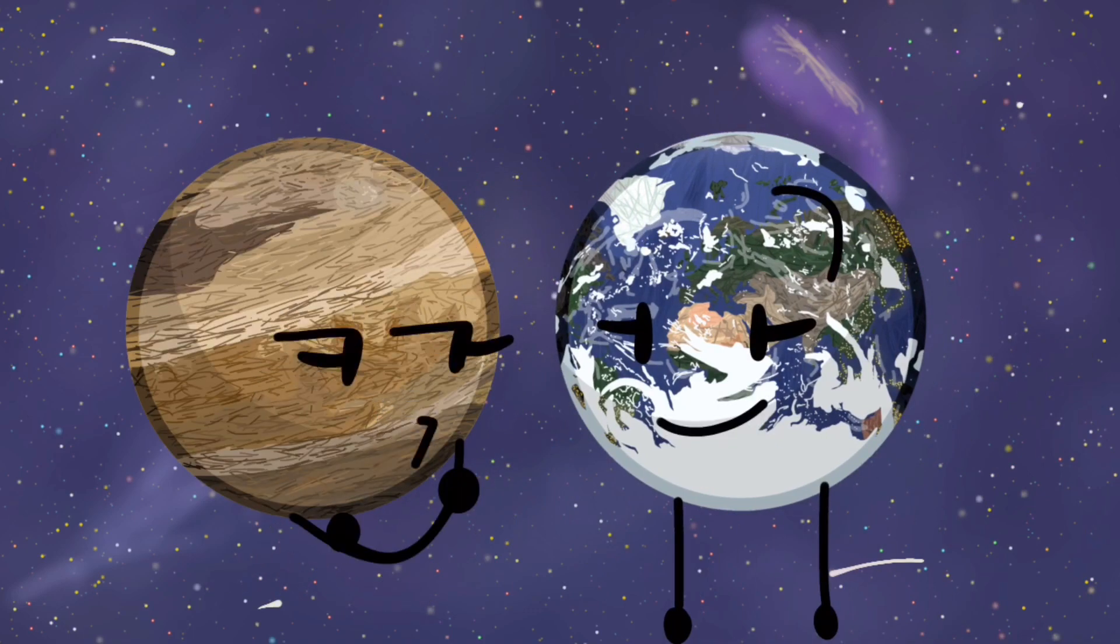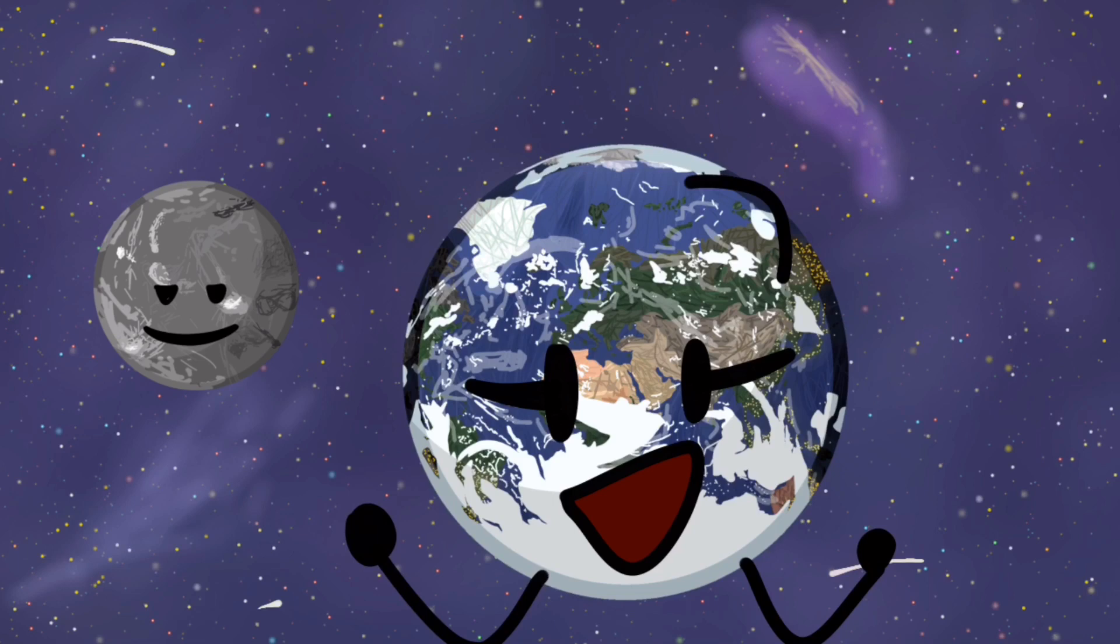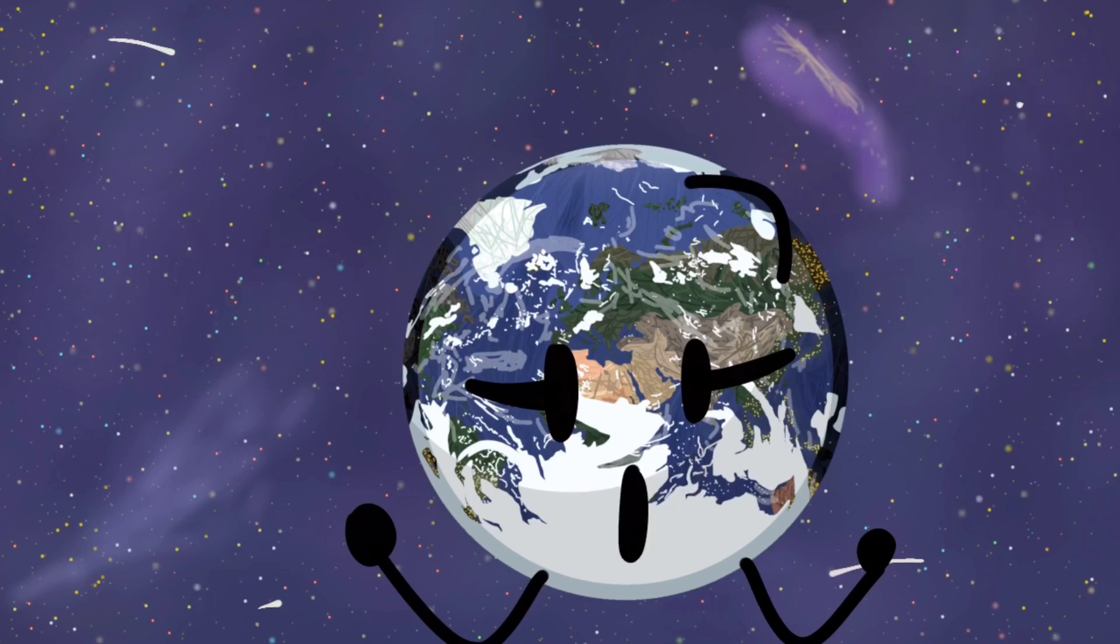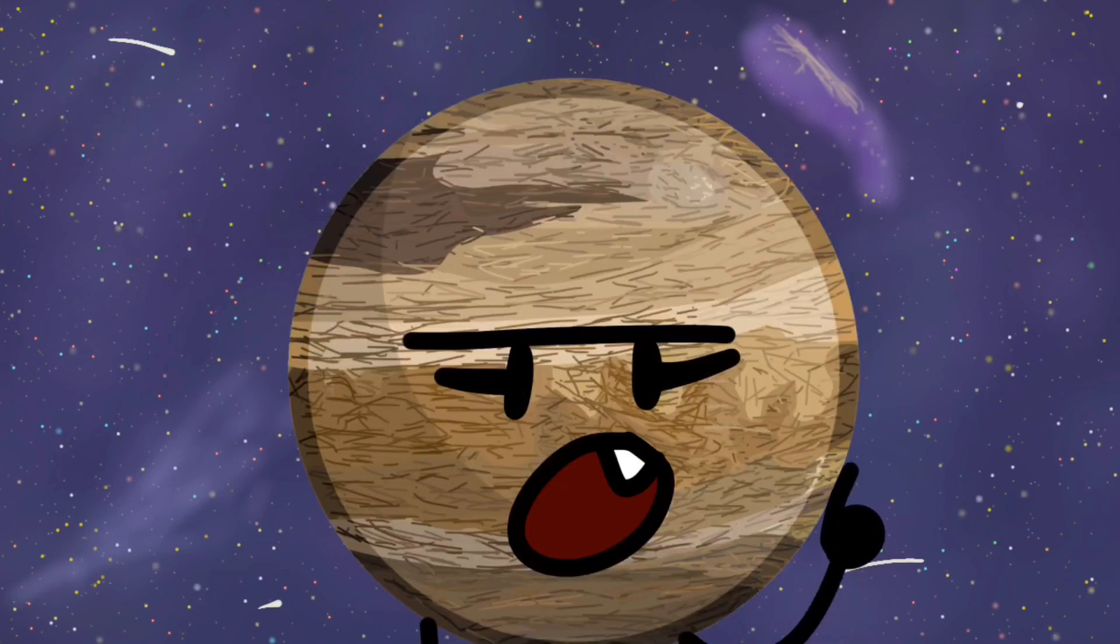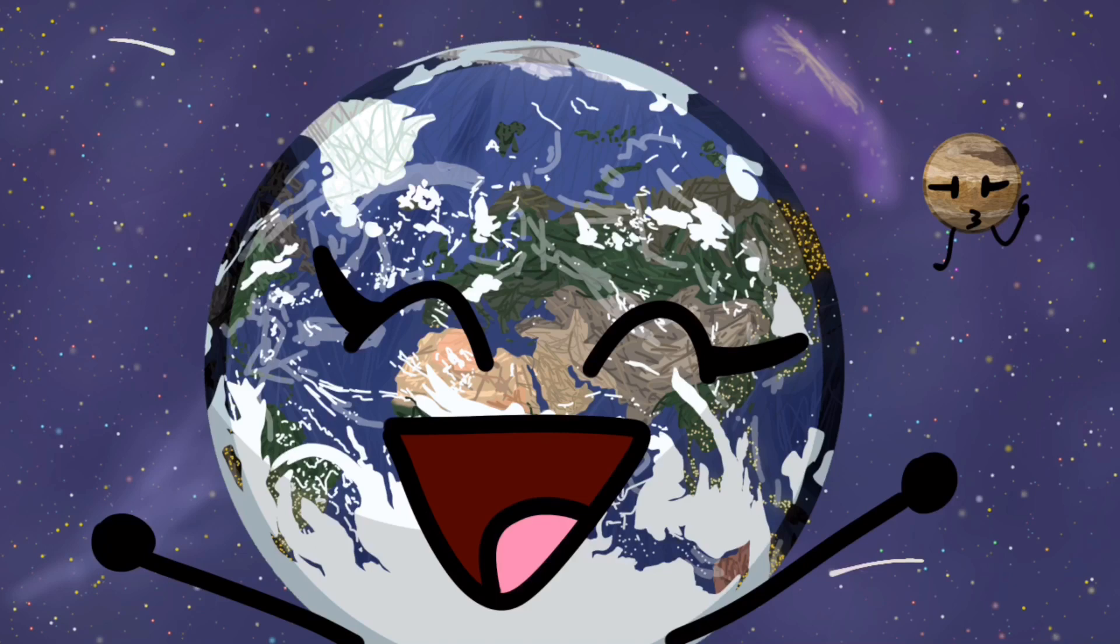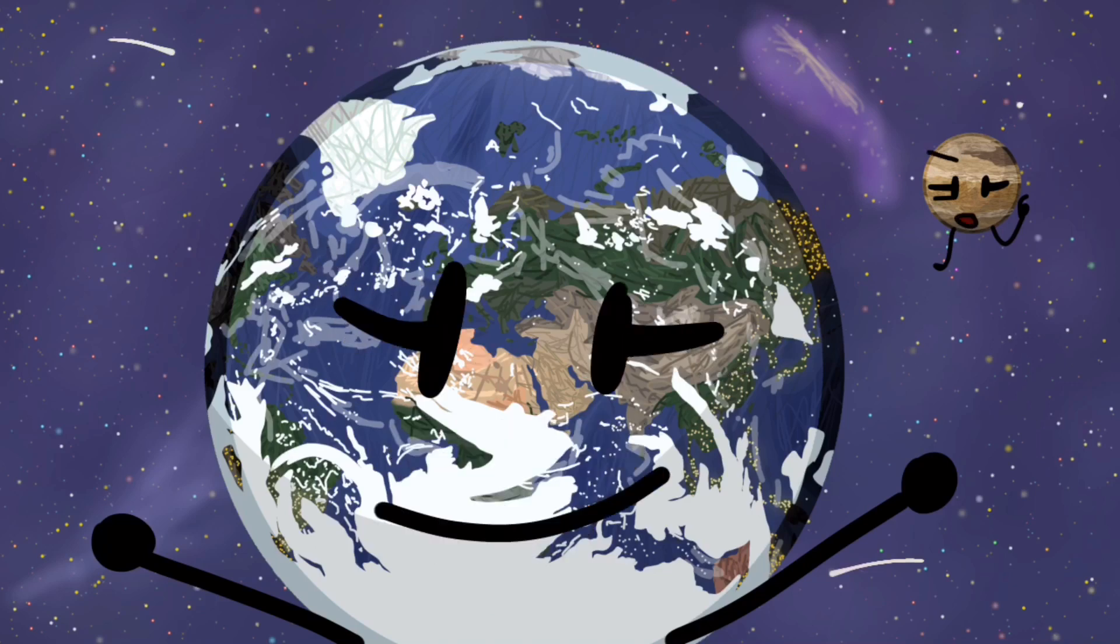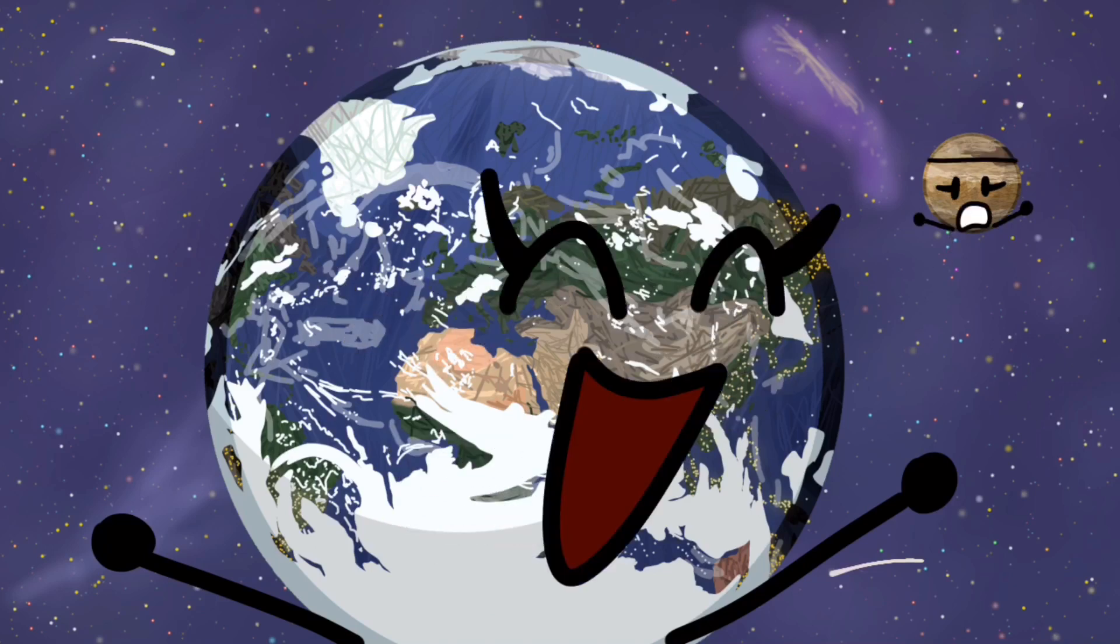Who should we show next? Mercury or Mars? Oh, both names start with M and end with a consonant. Consonant. Earth and Mercury doesn't. Okay, Mercury it is.